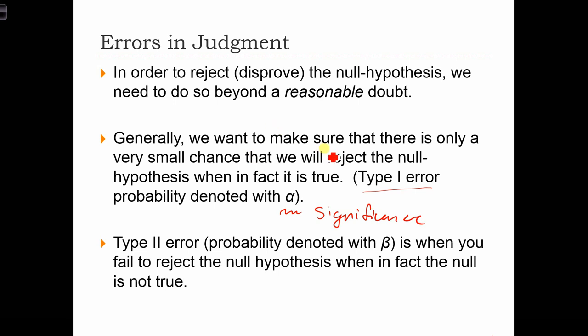Just like in a court case, we want to be very sure. So let's go back and read this again. We want a very small chance of rejecting the null hypothesis when, in fact, it is true. In other words, if the prevailing assumption is that the null hypothesis is true, we don't want to falsely reject that null hypothesis.